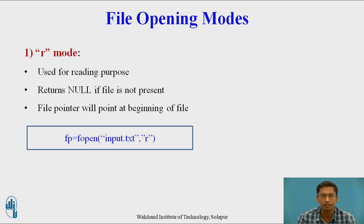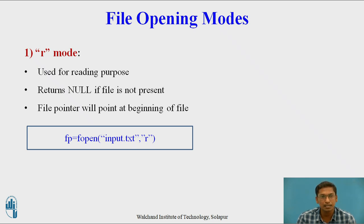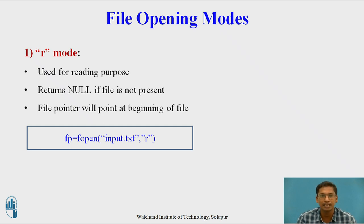The first mode is r mode. r mode is used for only reading purpose; writing is not possible with r mode. It returns null if the file is not present — meaning if you try to open a file that does not exist in r mode, it will return null. If you open a file in r mode and it is present, then the file pointer will point to the beginning of the file. Example syntax: fp = fopen("input.txt", "r"), where input.txt is the file I want to open for reading, and r is passed as the second argument.